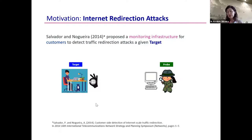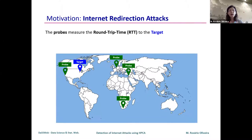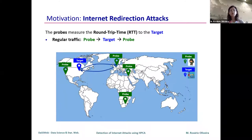The machine that may be the target of attacks is called the target in this work. The probes are a kind of structure that help us identify whether we are under attack. We have a set of probes spread around the planet, and the idea is to measure what is called round trip time — a probe sends a packet to a machine, the machine answers back, and we count this time.